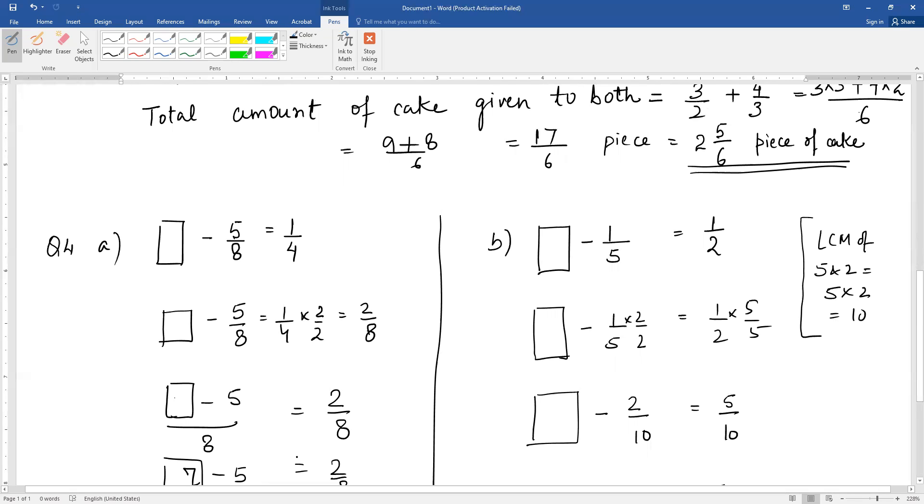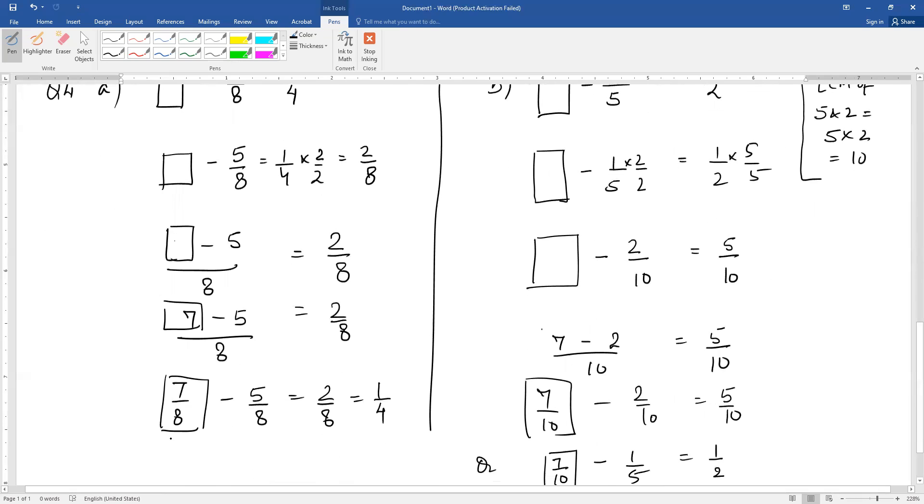The numerator has to be 7 so that 7 minus 5 gives 2. So our fill-in-the-blank is 7 with denominator 8. So 7 by 8 minus 5 by 8 gives 2 by 8, that is 1 by 4.